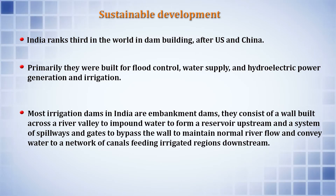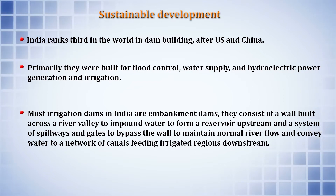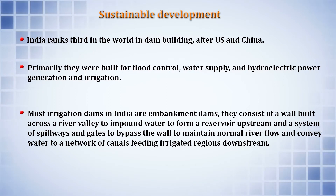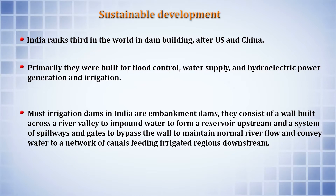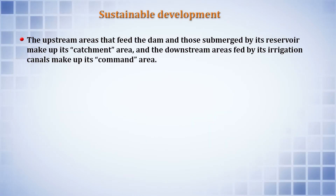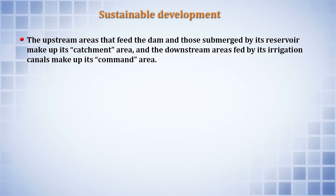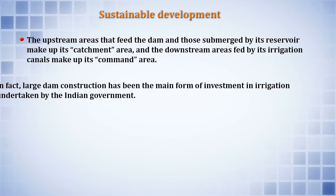Most of the irrigation dams in India are embankment dams, consisting of a wall built across a river valley to impound water and form a reservoir upstream, with spillways and gates to maintain normal river flow and convey water to irrigation canals downstream. The upstream areas submerged by the reservoir make up the catchment area, and the downstream areas fed by irrigation canals make up the command area. Large dam construction has been the main form of investment in irrigation undertaken by the Indian government.